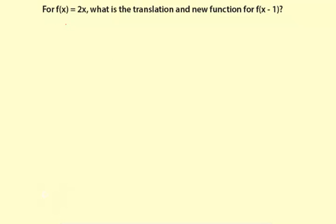So we have f(x) = 2x. What we're doing is we're taking 1 away from the inputs. So how do you do that?